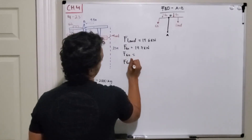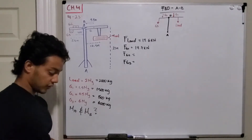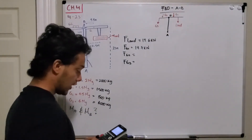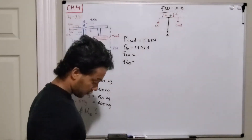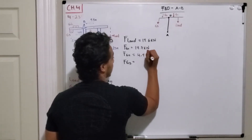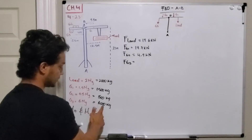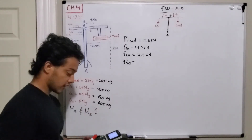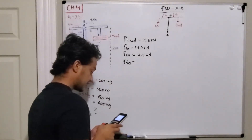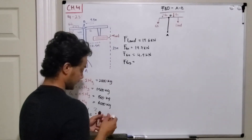For force G2, we have 500 kilograms multiplied by 9.81, which is 4.9 kilonewtons. For force G3, we have 6,000 kilograms multiplied by 9.81, which gives us 58.9 kilonewtons.